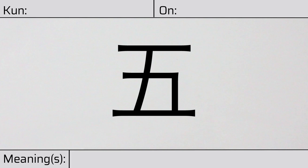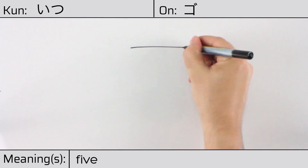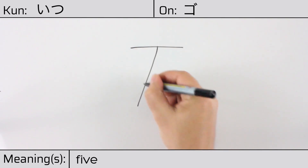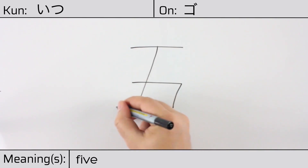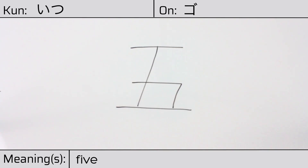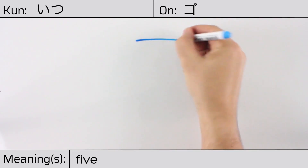This kanji has a kunyomi or Japanese reading of itzi, and it has an onyomi or Chinese reading of go. This character has the meaning five. Here is the stroke order. This character is made up of the following radicals or parts: a horizontal line, a vertical line, a strange part in the middle, and finally one more horizontal line.